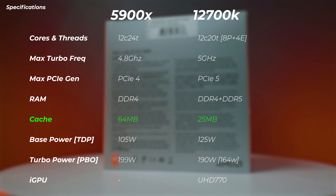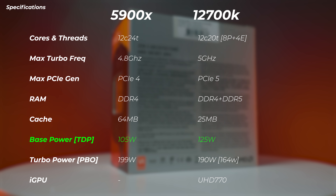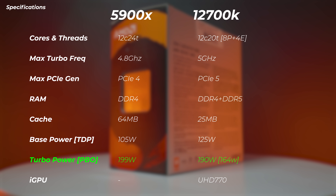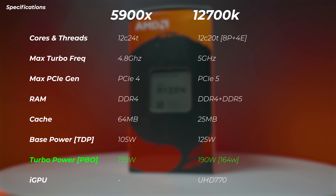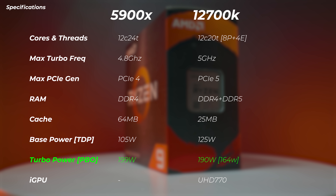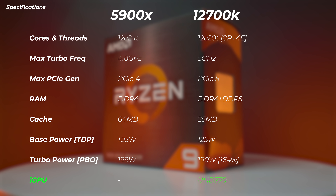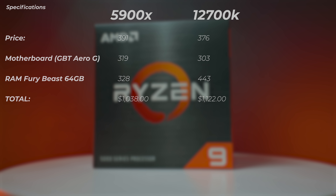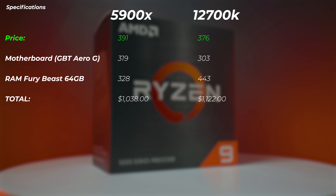In terms of cache, the Ryzen has 64 megabytes while the Intel has 25 megabytes. The base TDP is 105 watts on the Ryzen and 125 watts on the 12700K. With PBO enabled on Ryzen, I can see 199 watts pulled from the socket. The 12700K's max turbo power is rated at 190 watts, but I'm seeing up to 164 watts pulled. The Ryzen doesn't have an iGPU, whereas the 12700K has a UHD 770 iGPU — which for creators, especially video editors, is a huge thing. On price, the Intel comes in at around $376 and the Ryzen at $391.